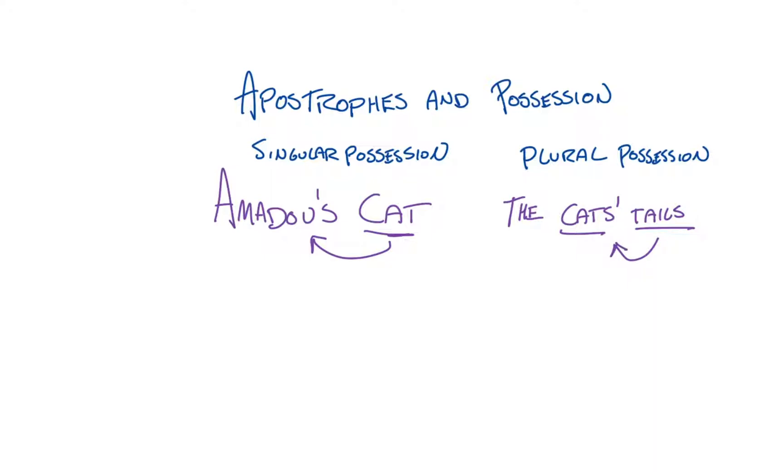So if you're looking at a phrase that says Amadou's cat's tails, we know that the apostrophe placement in cats is wrong, unless Amadou has a cat with multiple tails, right? So for plural possession, the apostrophe would go after the S. The tails belong to the cats, and those cats belong to Amadou.